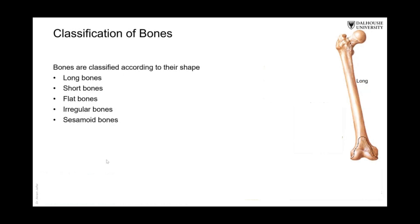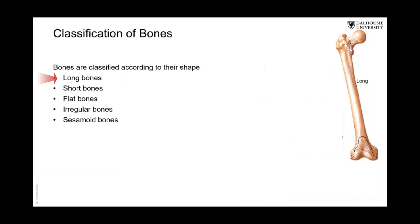Bones are classified into different types. For example, we have long bones — like this bone here, the femur. It is the longest bone in the body, but it is not called a long bone because it is long. It is called a long bone because it has a narrow shaft and two distended extremities. You can see here: this end is distended and this end is distended.